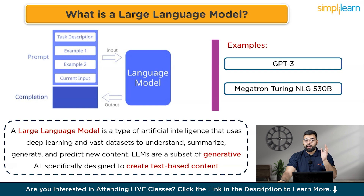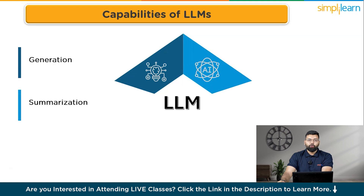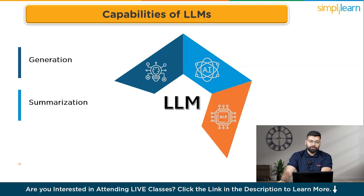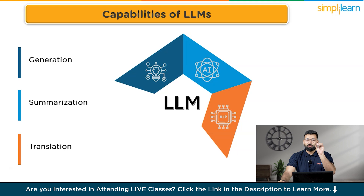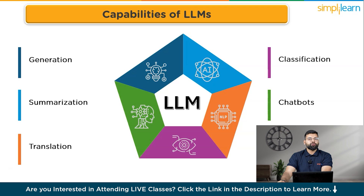Let's explore the capabilities of large language models. First, generation — they can create stories, marketing content, and more; GPT-3 can write coherent articles or creative pieces. Then summarization — condensing legal documents, meeting notes, or lengthy text into concise summaries, particularly useful in legal and corporate settings. Translation — converting text from one language to another or even into code, invaluable in global communication. Classification — analyzing text to determine sentiment, classify topics, or identify toxic language for content moderation. And chatbots — building virtual assistants and Q&A systems that interact with users in a human-like manner for customer support.